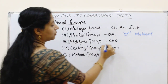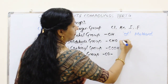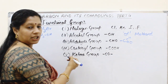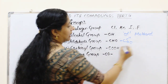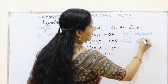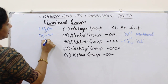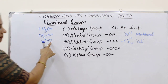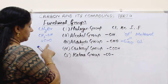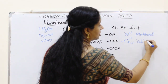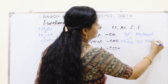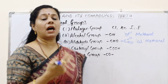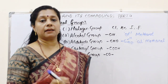The third functional group is the aldehyde group, CHO. In detail, the bonding is: C single bond H, double bond O. When the aldehyde group is present, the name ends with '-al'. For HCHO, the simplest aldehyde, the 'e' is removed and 'al' is added, giving methanal. Similarly we get ethanal, propanal, butanal, pentanal, and hexanal. When the name ends with '-al', it is an aldehyde.